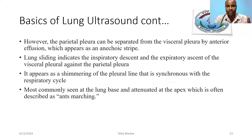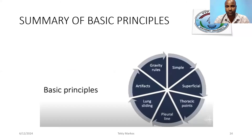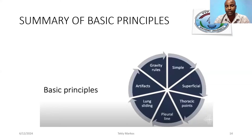Lung sliding is most commonly seen at the lung base and attenuated at the apex. It is often described as ants marching — or ant march — which is described in lung ultrasound when examining the patient. We will demonstrate sliding or marching ants with videos. The summary of basic principles of lung ultrasound: we look for artifacts, for gravity, for simple structures, and we look superficially.